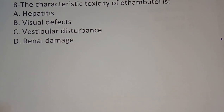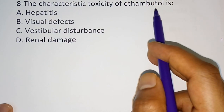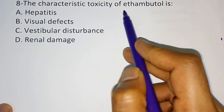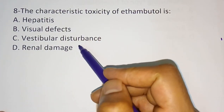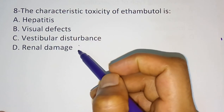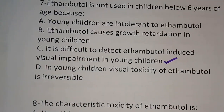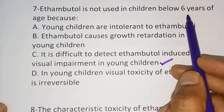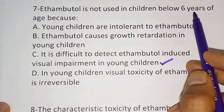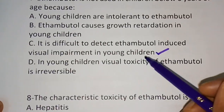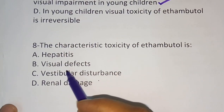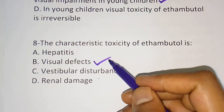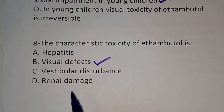Eighth question: the characteristic toxicity of ethambutol is — option A: hepatitis, option B: visual defect, option C: vestibular disturbances, option D: renal damage. As discussed in the seventh question, ethambutol is not used in children below 6 years due to visual impairment. Therefore, the characteristic toxicity of ethambutol is visual defects — option B is the correct answer.